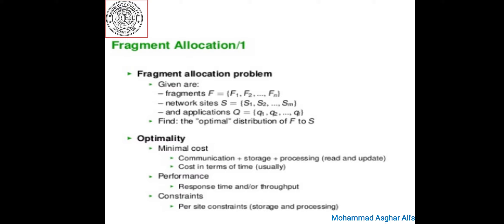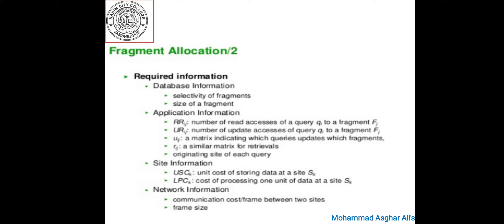The second measure is performance. The allocation strategy is designed to maintain a performance matrix. Two well-known objectives are: to minimize the response time and to maximize the system throughput at each site. There is also a per-site constraint covering storage and processing.